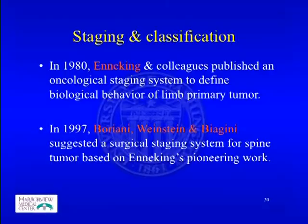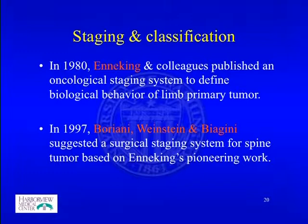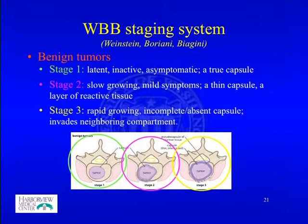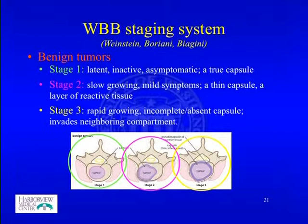For staging and classification of primary tumors, in 1980 Enneking and colleagues published the Oncological Staging System to define the biological behavior of limb primary tumors. In 1997, the Boriani group suggested a surgical staging system for spine tumors based on that work. For benign tumors, there is a three-stage system: Stage 1 is latent, inactive, asymptomatic with a true capsule; Stage 2 is slow growing with mild symptoms and a thin capsule; Stage 3 is rapidly growing with an incomplete or absent capsule invading neighboring compartments.